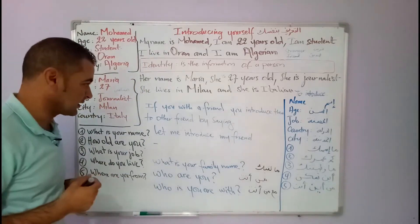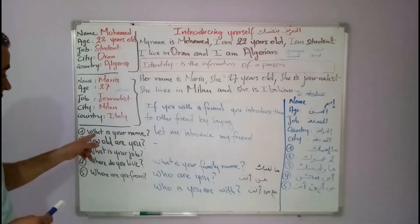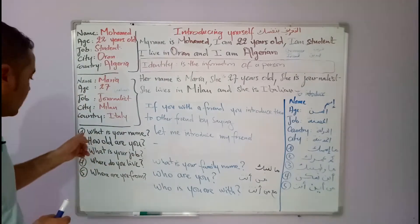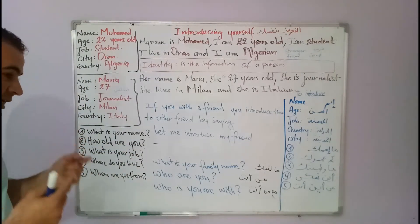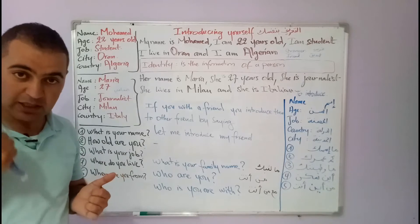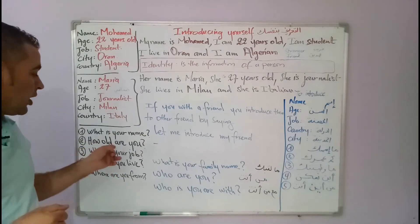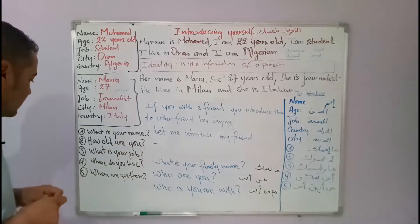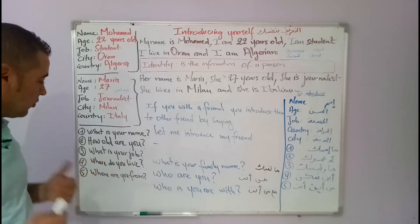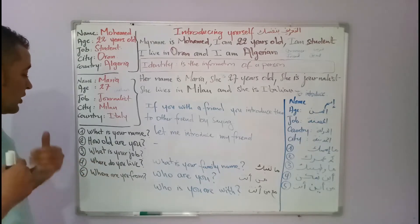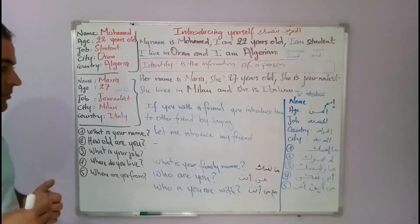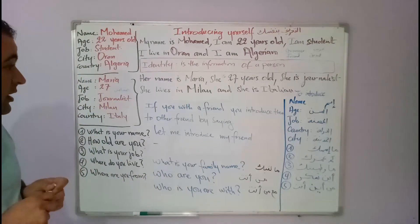So the first question is: what's your name? If you want to know the name of the person. What is your name? To know his age: how old are you? If you want to know about another person, you would say: how old is he or how old is she? What is your job? To know about the job or profession. Where do you live? The city you live in or your residence. And where are you from? The country and nationality.